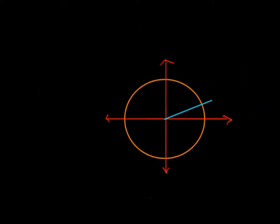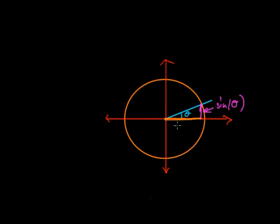To begin, we'll look at the unit circle. At a particular angle in the unit circle we have two components. The first component is the sine component, which is equal to sine theta, and the other component is the cos component, cos theta.